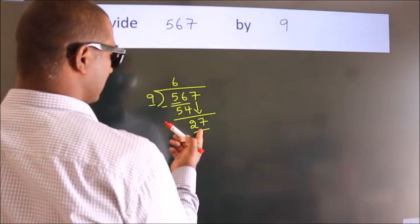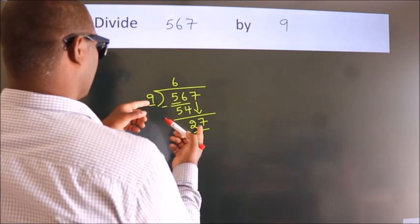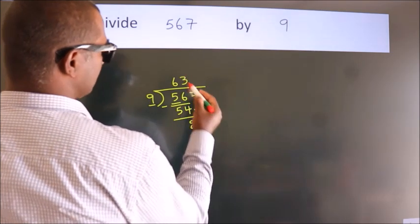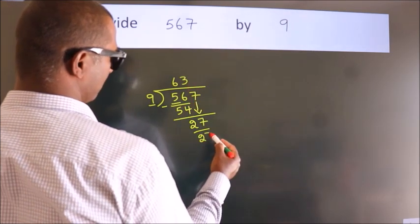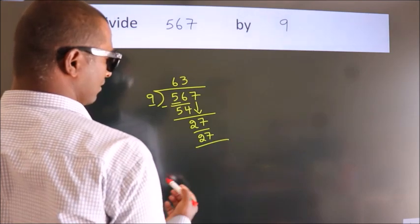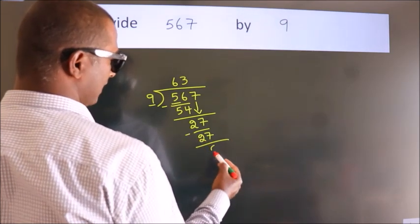When do we get 27? In 9 table, 9 threes, 27. Now, we subtract. We get 0.